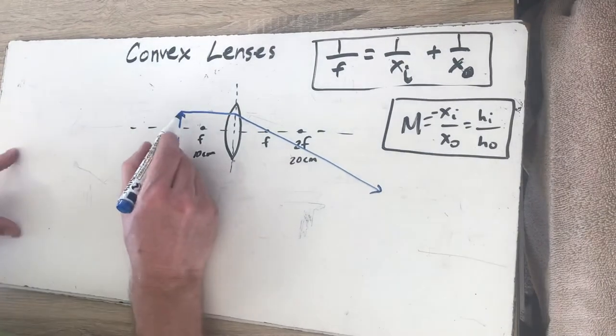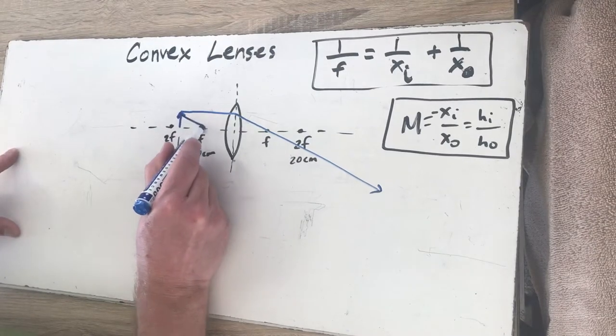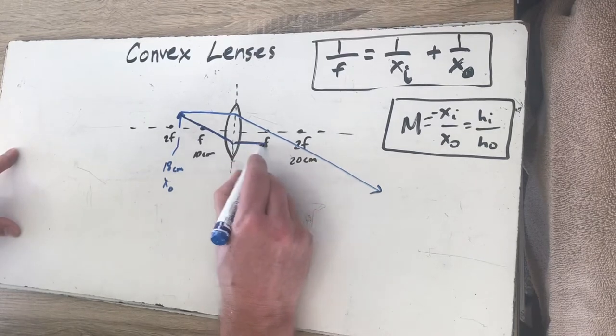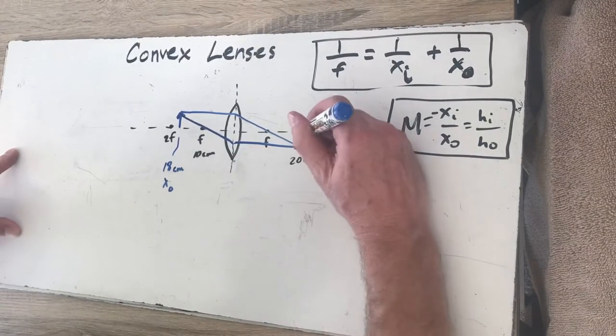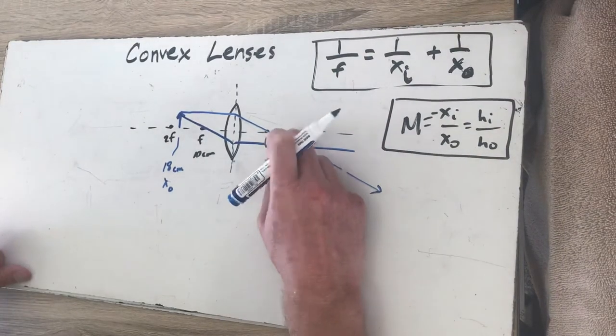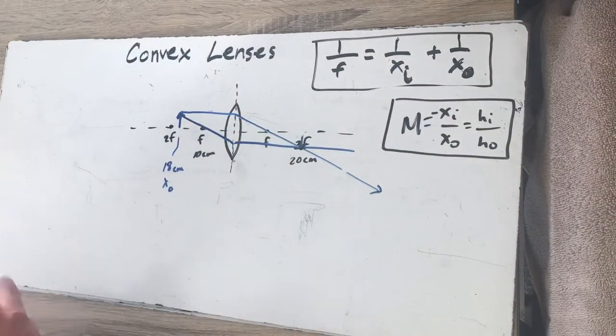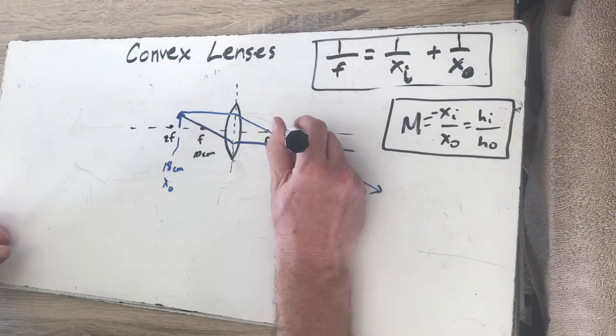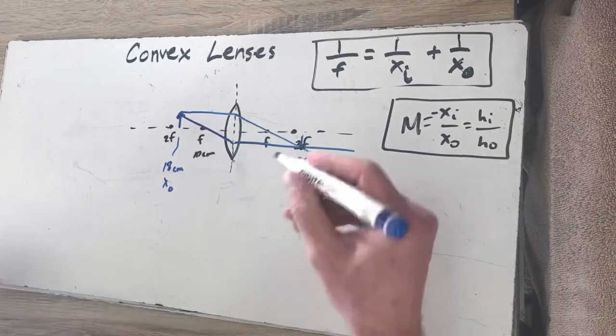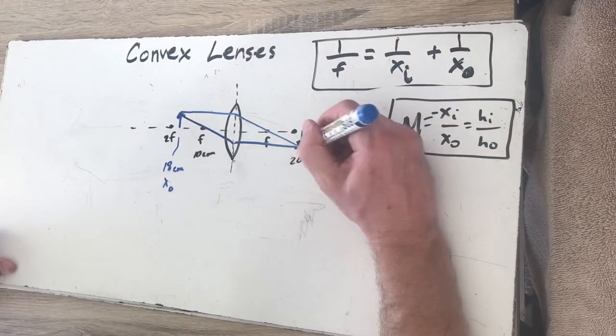The other ray we're going to draw starts out going through the focal point, it's going to hit that lens, bend twice, and eventually come out parallel. Okay, my drawing here is probably slightly inaccurate, I just kind of eyeballed it a little bit. I think 2F is going to be maybe right about in that range, so it looks like we are going to be just beyond it.